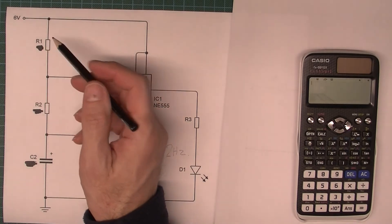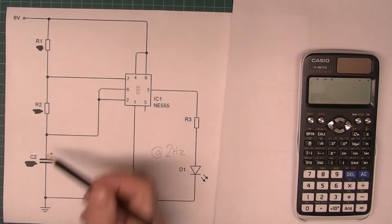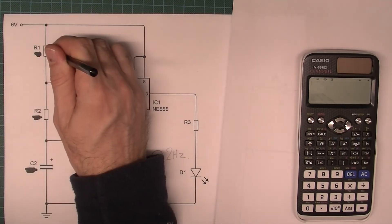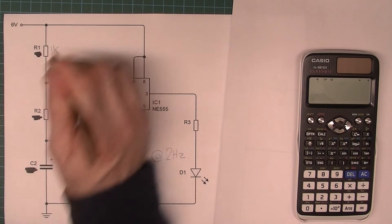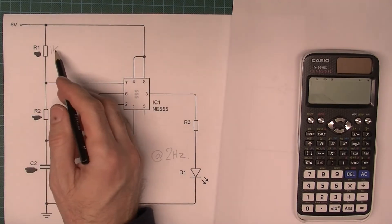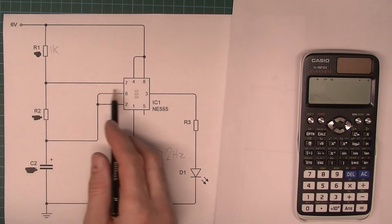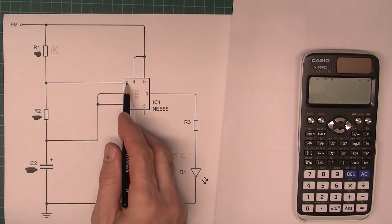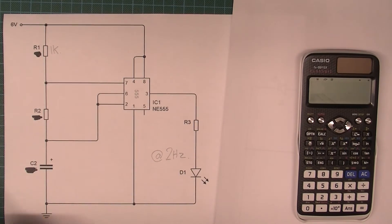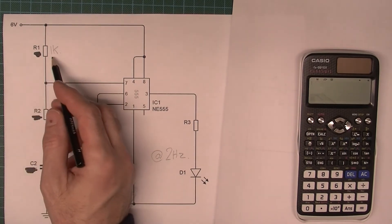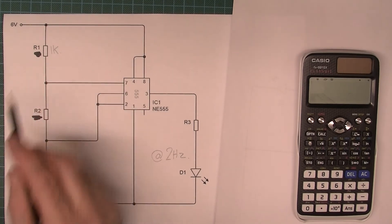So we're going to have to choose values for these two resistors and the capacitor here. Now my advice to you is go for 1k for the top resistor. You don't want to go less than 1k. If you go less than 1k then you're putting a significant amount of current into the discharge pin and that's not advisable. So you want to keep it at least 1k and there's not really any reason to use any other value so just stick with that.